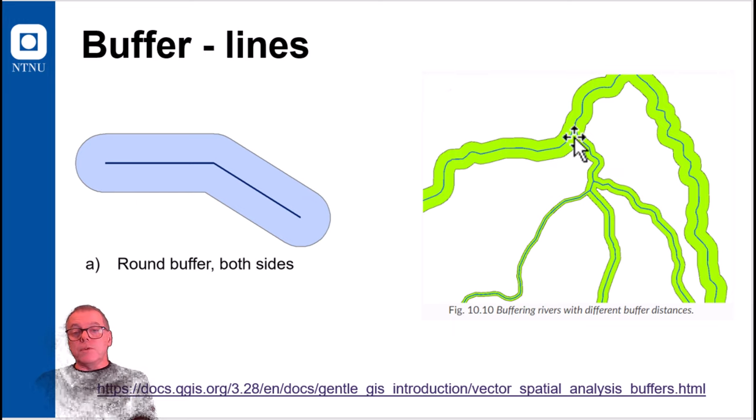And here we show some river, where different segments of the river are buffered differently. For instance, because these are streams and they are represented as lines, but nevertheless they may have different width. So they may be half a meter, one meter, or two meters. And this is stored as an attribute value, and you can use this to create buffer with different buffer distances.